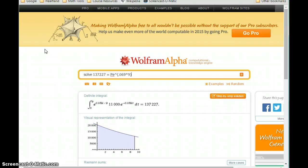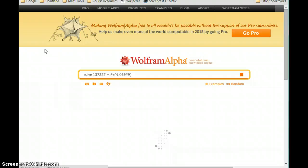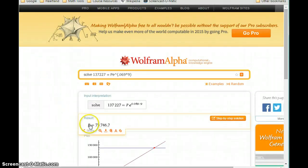We can type in that equation, ask Wolfram Alpha to solve for us for P. And we get, if we round this to the nearest whole number, $73,747.